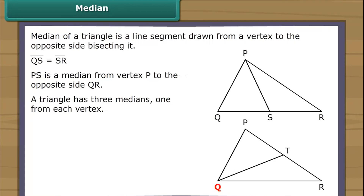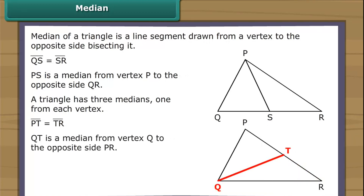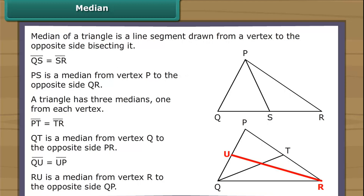We draw a line segment from Q to cut PR into two equal halves at point T; therefore, QT is a median from vertex Q to the opposite side PR. We draw one more line segment from R to cut QP into two equal halves at point U; therefore, RU is a median from vertex R to the opposite side QP.